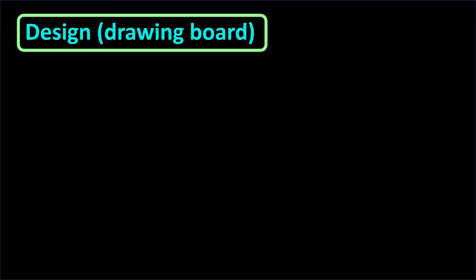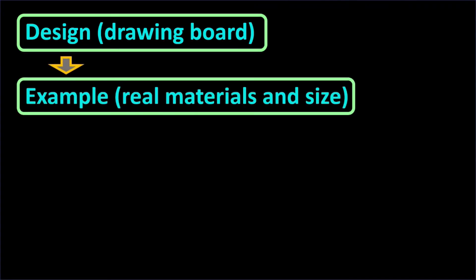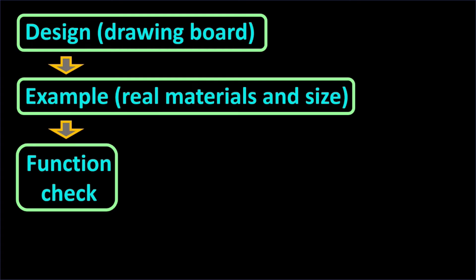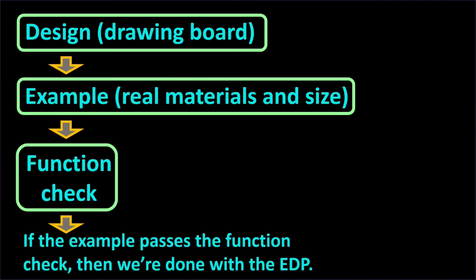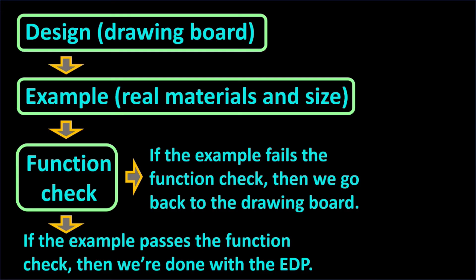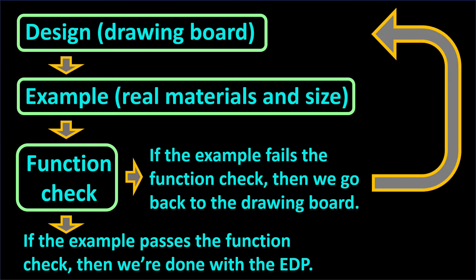To summarize: in the design step, engineers make drawings, sometimes using a drawing board. In the example step, they build the product with real materials at real size. In the function check step, they test the example product. If it passes, the engineering design process for that project is complete. If it fails, engineers go back to the drawing board, make design changes, build another example product, and test again — which is exactly what the SpaceX engineers did after the eighth and ninth Starship prototypes crashed instead of landing properly. This cycle of repeating steps is where the expression 'back to the drawing board' comes from.